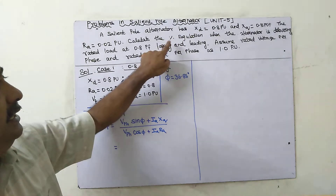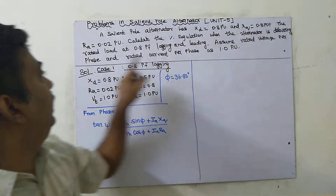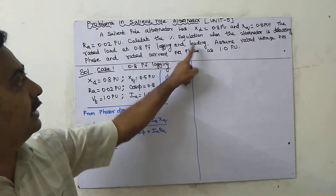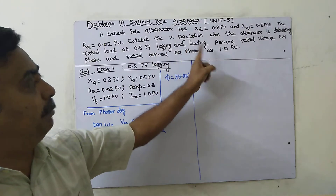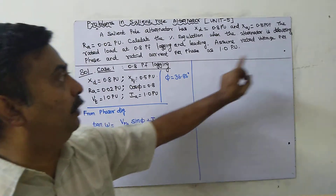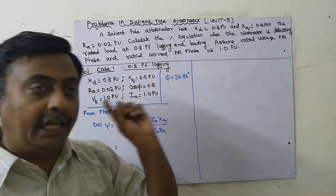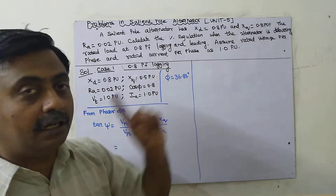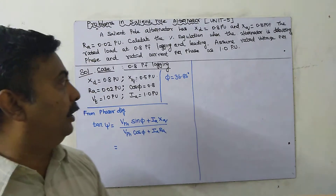The armature resistance ra = 0.02 per unit. Calculate the percentage regulation when the alternator is delivering rated load at 0.8 power factor lagging and leading. Assume rated voltage per phase = 1 per unit and rated armature current = 1 per unit. Everything is in per unit.